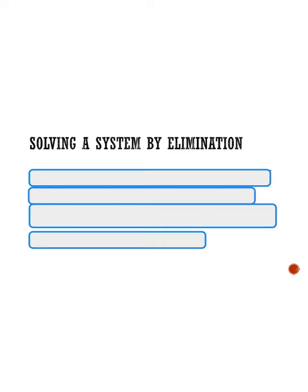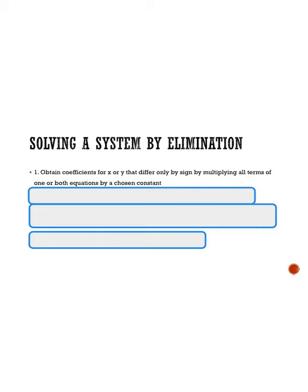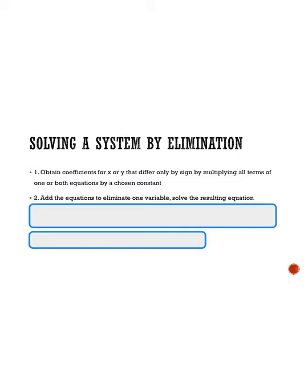We're reviewing the steps of elimination. To begin with, you want to make sure that you have coefficients for both x and/or y that differ only by a sign. So if I have a positive 3x, then I would have maybe a negative 3x. Or if I had a negative 2y, I could then get a positive 2y. If we don't have that, we can multiply all terms in one or both equations to make the constants differ by just a sign. Once you've done that, we can add the two equations to do the elimination process, getting one of our variables — either x or y — to cancel out. Then we can finish solving what we have left.